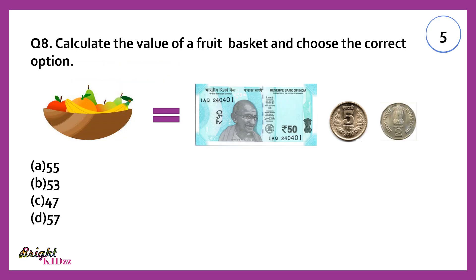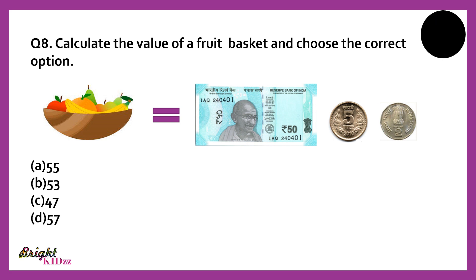Calculate the value of the fruit basket and choose the correct option. Answer: 50 plus 5 plus 2, which becomes 57.